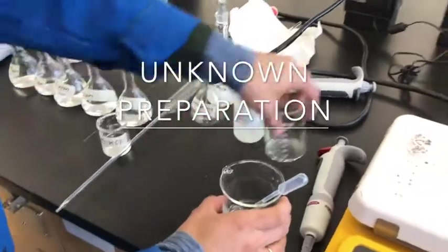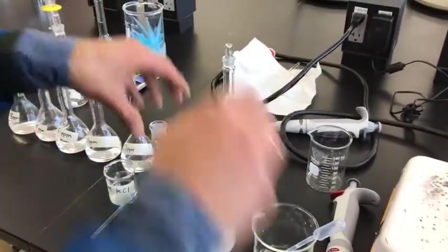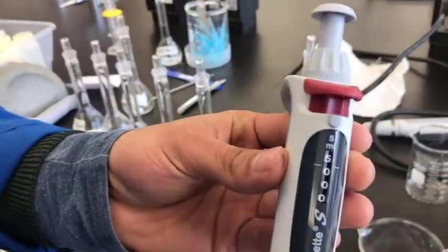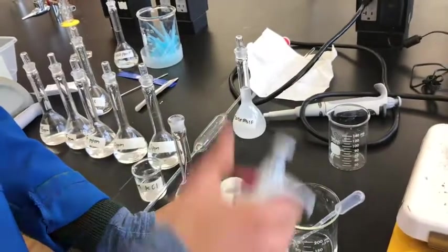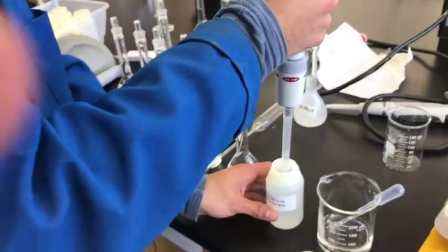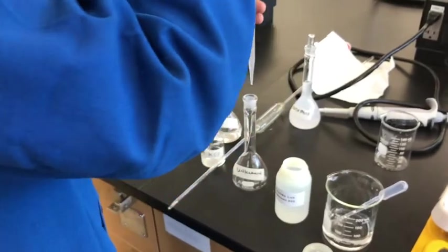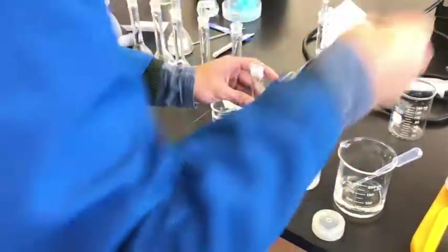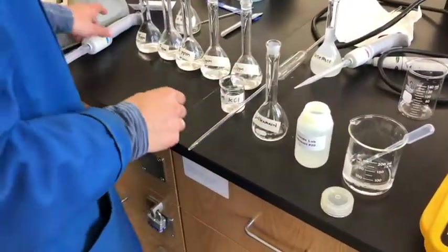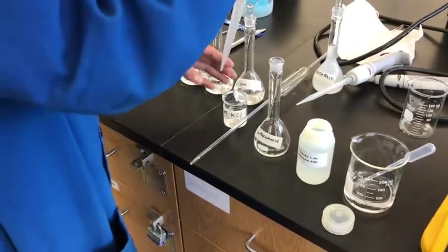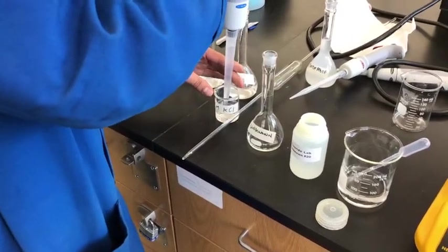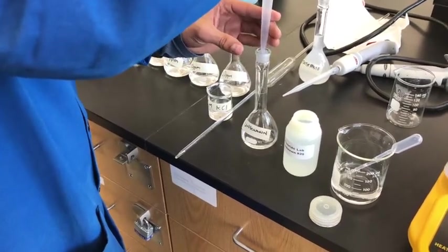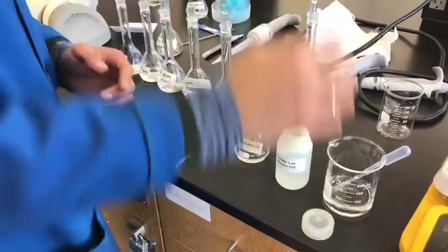The next part is to take your unknown which has been assigned to you. We're going to do a dilution as well. We take 5ml of our unknown into a 100ml volumetric flask. We take 10ml of the 1 molar KCl solution with the same flask and dilute to the mark.